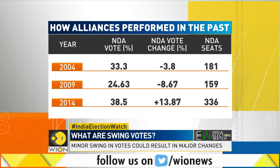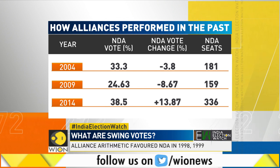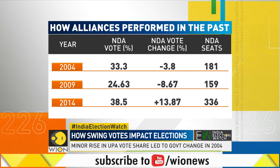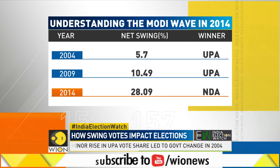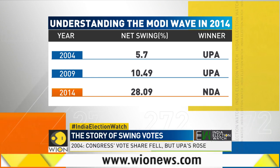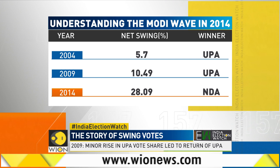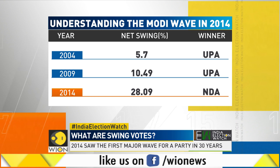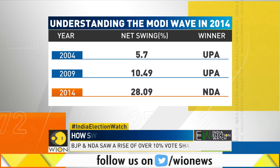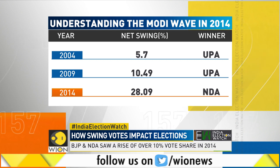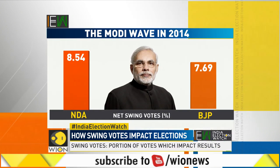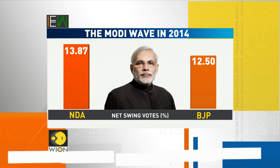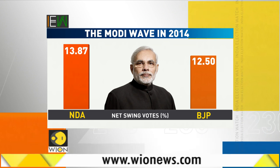This is how elections in alliances generally work — small numbers make a big difference. The 2014 elections were one of a kind: there was a 14% vote swing against UPA and a 14% vote swing for NDA, giving Narendra Modi an absolute majority. The 2014 elections were not a case of swing votes — it was a clear wave. Out of the 30.8% of votes that swung towards NDA, the BJP alone gained 12.5%, which explains the margin and scale of the victory.